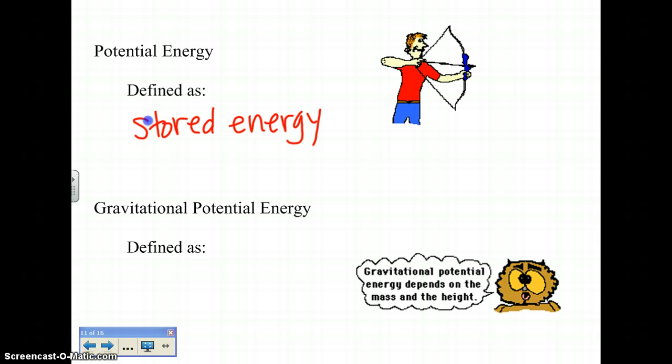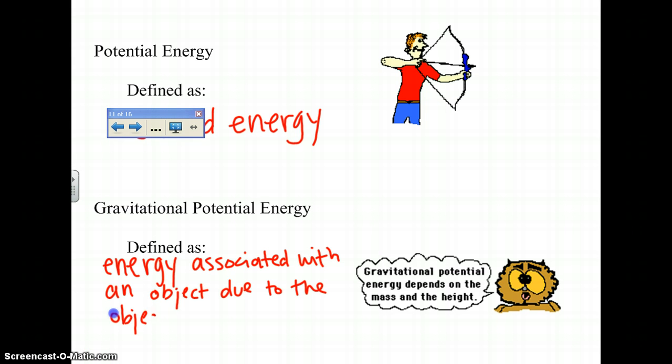First will be gravitational potential energy, and then followed by elastic potential energy. So gravitational potential energy is energy associated with an object due to the object's position relative to a gravitational source. As our owl says, gravitational potential energy depends on mass and height.